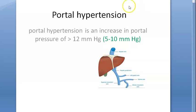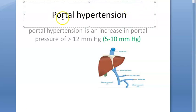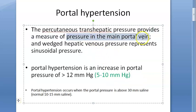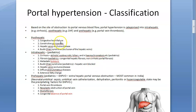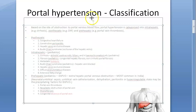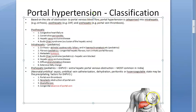In this video, let us look at portal hypertension as a paediatrics topic. If the pressure in the portal vein is greater than 10 millimeters of mercury, you can say it is portal hypertension. In adults, you have seen what the causes of portal hypertension are in the portal hypertension video in pathology.